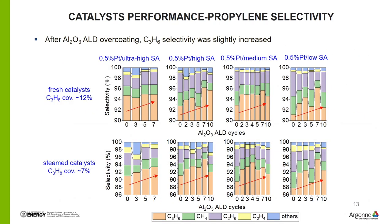This slide shows the propane selectivity, which means the percentage of propylene among all the products. The x-axis is for each catalyst after each ALD cycle, and the y-axis represents the product selectivity. The orange bar represents the propylene selectivity. We can see that for both fresh and steamed catalysts, with the increase of ALD cycles, the propylene selectivity — the orange bar height — slightly increased.